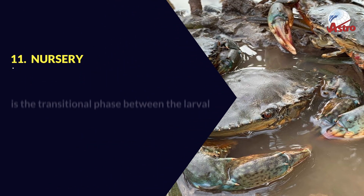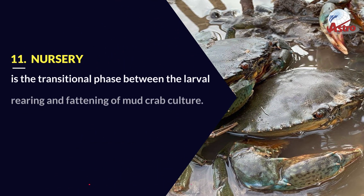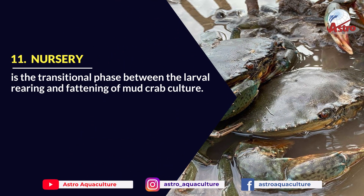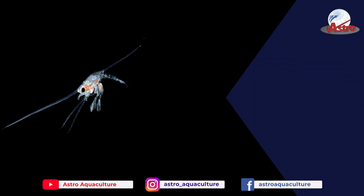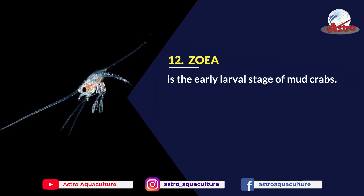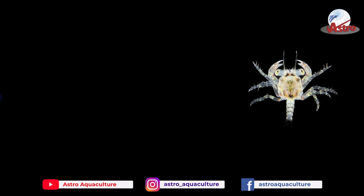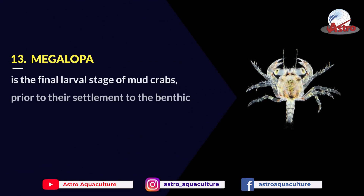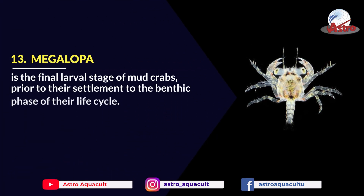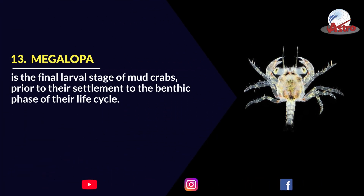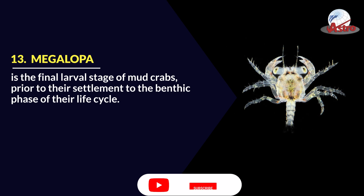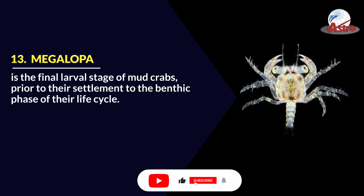Nursery: Is the transitional phase between the larval rearing and fattening of mud crab culture. Zoea: Is the early larval stage of mud crabs. Megalopa: Is the final larval stage of mud crabs, prior to their settlement to the benthic phase of their life cycle.